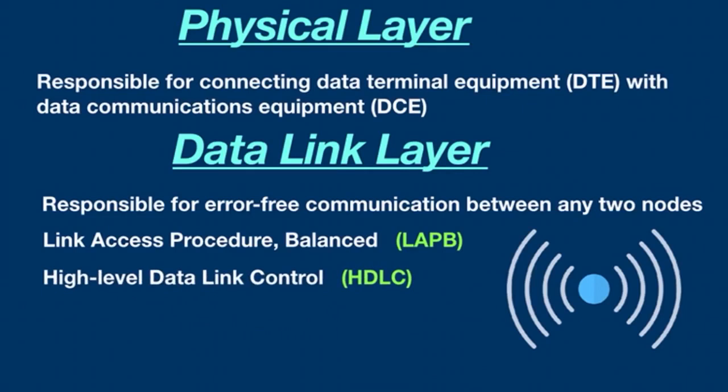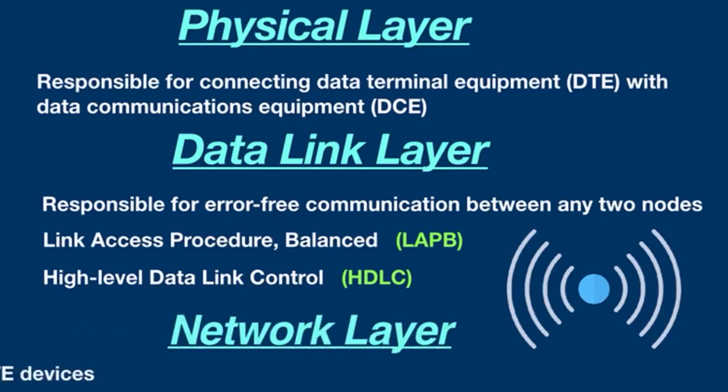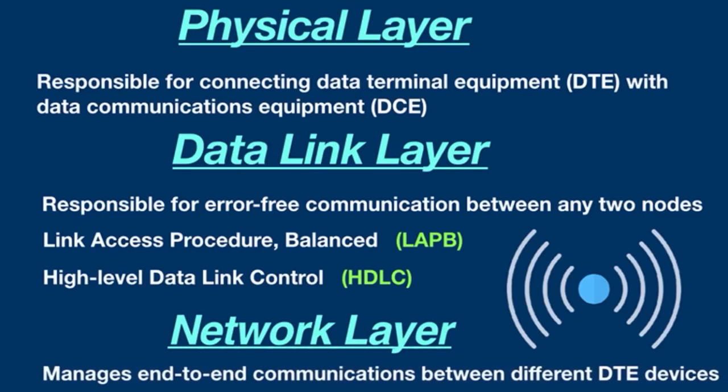The data link layer is also called link access procedure balanced, derived from the high-level data link control protocol. The network layer manages end-to-end communications between different DTE devices and is concerned with connection setup and teardown, flow control, network routing, and the multiplexing of simultaneous logical connections over a single physical connection.